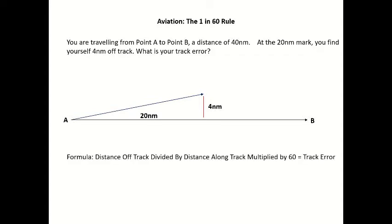The formula for the 1 in 60 rule is quite simple. If you can remember this formula, regardless of how complex the question is — if you draw the question out and write the formula down, you'll get it correct every single time. The formula is: distance off track divided by distance along track, multiplied by 60, gives you track error. So the answer is 4 nautical miles off track divided by 20 nautical miles along track, times 60, equals 12 degrees track error.